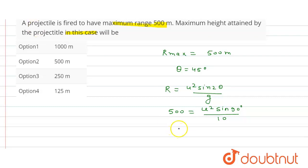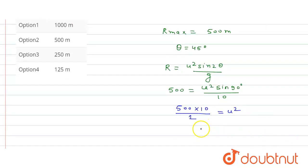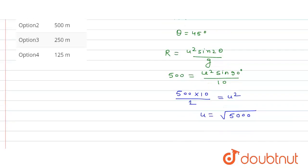So from here, this will be 500 into 10 upon sine 90 is equal to 1, that is equal to u squared. So u value will be under root of 5000. So this is the value of u.